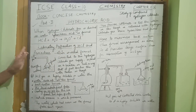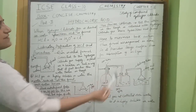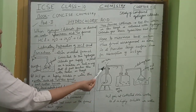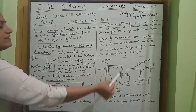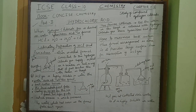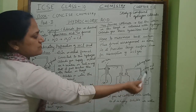Now let us prepare hydrochloric acid in the laboratory. Earlier in part 1 we prepared hydrogen chloride gas. In the apparatus arrangement, NaCl was taken in the round bottom flask and dilute sulfuric acid was added. The hydrogen chloride gas produced is collected by downward delivery, and passed through concentrated sulfuric acid so that we get dry hydrogen chloride gas.